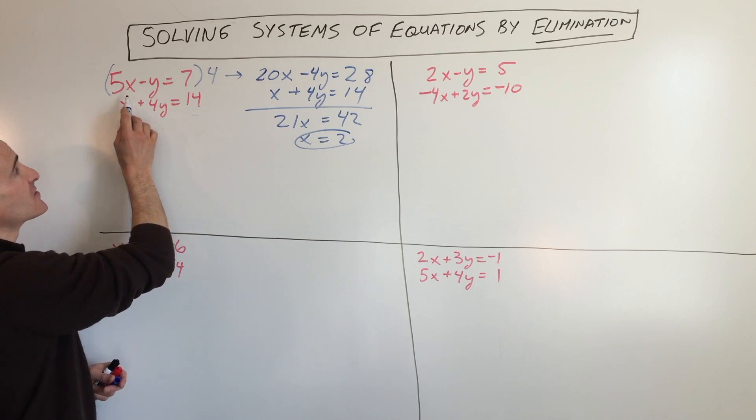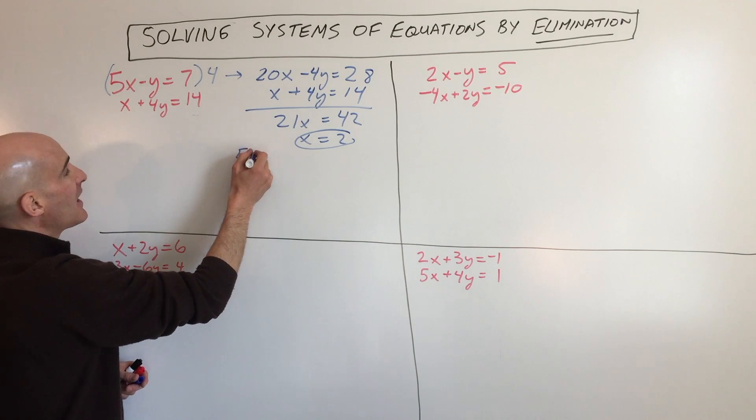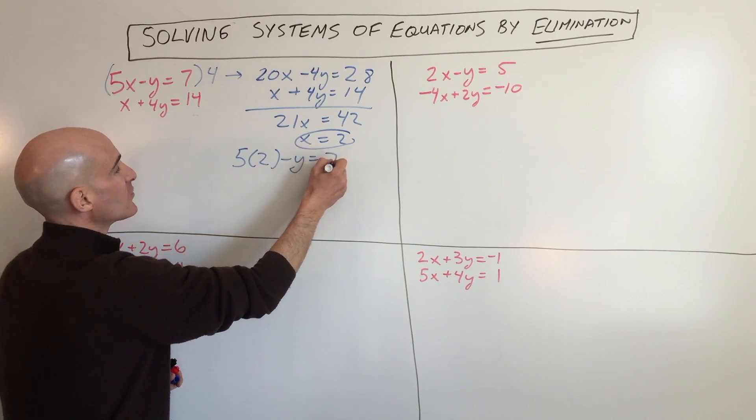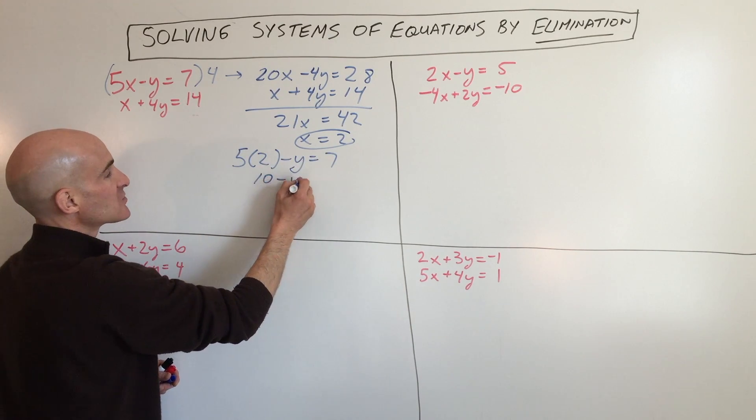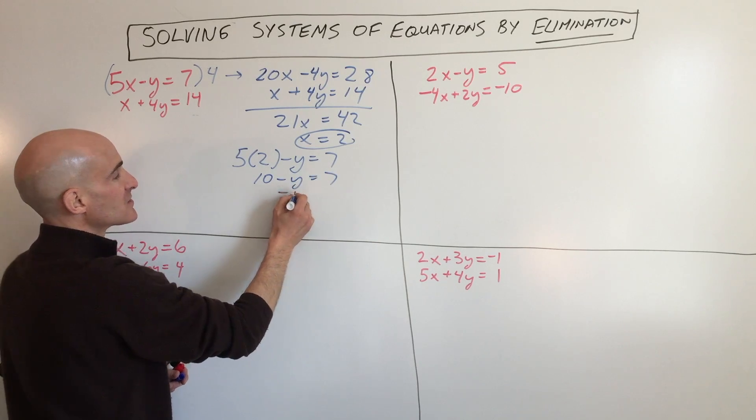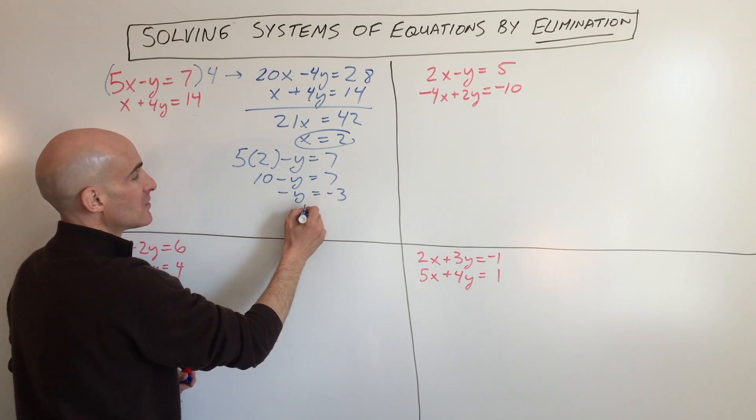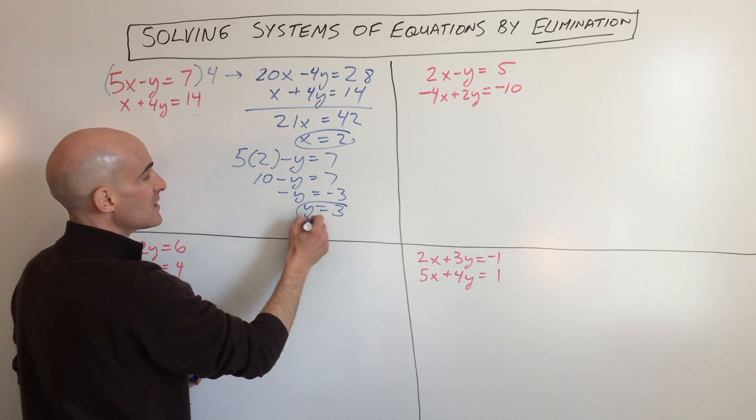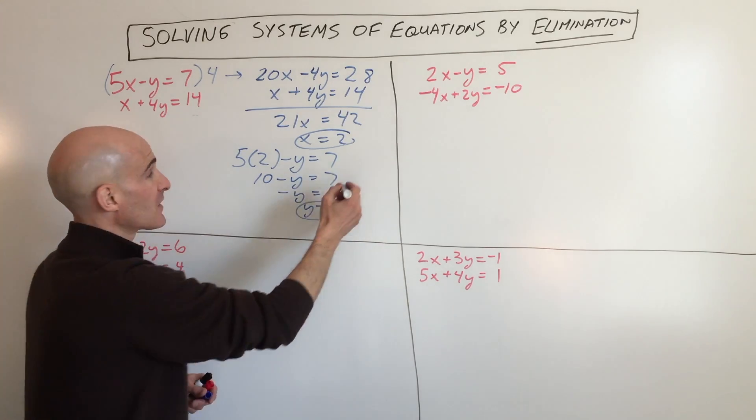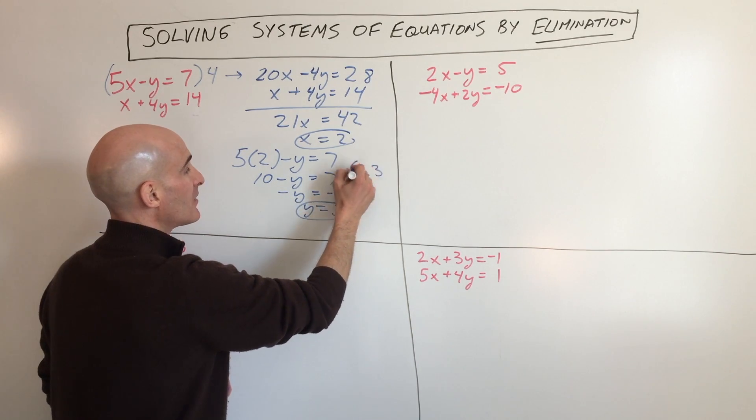So I'll just put it into this top equation. So that's 5 times 2 minus y equals 7. So that's 10 minus y equals 7. Subtract 10. So you can see y equals 3. So our final result is 2, 3.